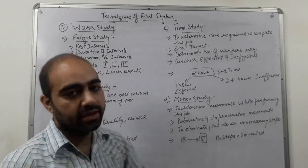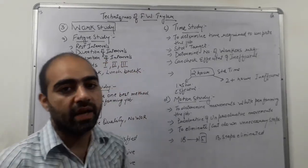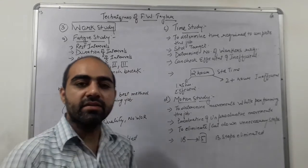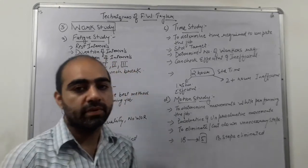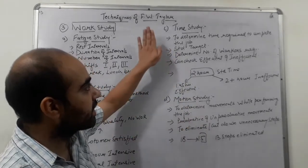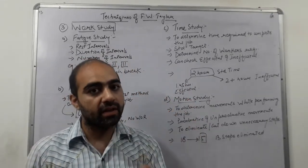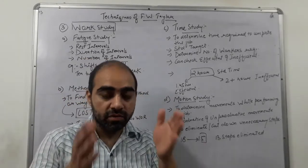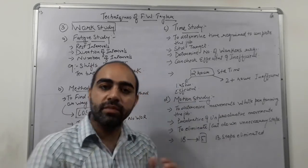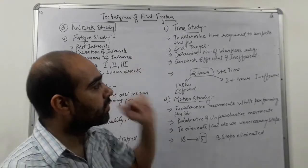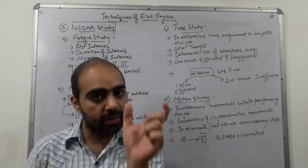The third element of work study is time study — the duration of time to complete work. Every work needs to be done in a proper standard time. For example, in a CBSE board examination, the time period is three hours. Time study determines the time required to complete a job, so that the work can be completed within the standard timeframe.